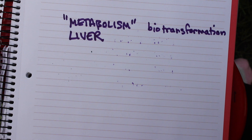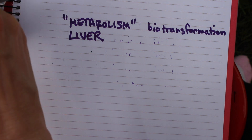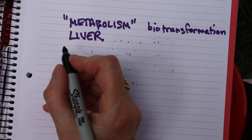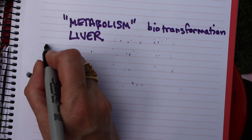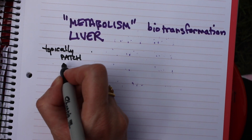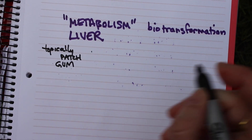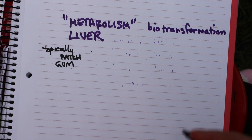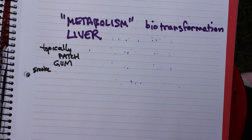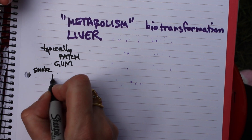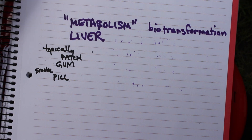Let's talk about nicotine as an example, because there are a bunch of different ways you can take it. You can give it topically as a patch, as gum — and I consider gum not to be enteral, and you'll understand why after we discuss this — you can smoke it, which is how most people ingest their nicotine, or you can take a pill. So you could make it as a patch, gum, or a pill. Let's do a nicotine example.